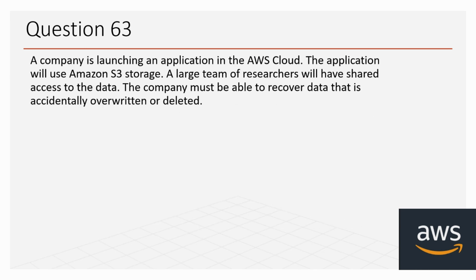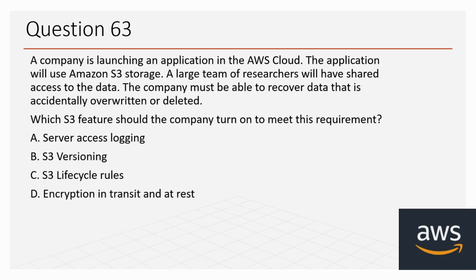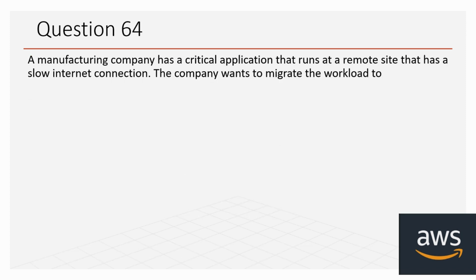Question 63: A company is launching an application in the AWS Cloud. The application will use Amazon S3 storage. A large team of researchers will have shared access to the data. The company must be able to recover data that is accidentally overwritten or deleted. Which S3 feature should the company turn on? Options: A: server access logging, B: S3 versioning, C: S3 lifecycle rules, D: encryption in transit and at rest. The correct option is B, S3 versioning.